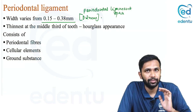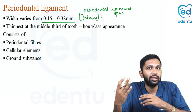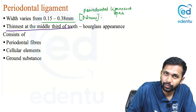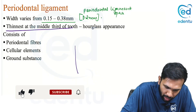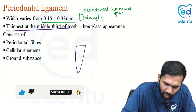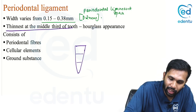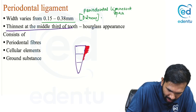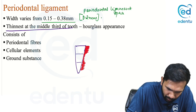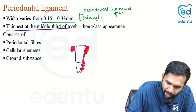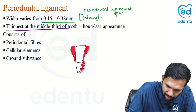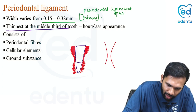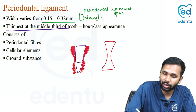The width of the periodontal ligament space is not constant — it varies across different regions. It is thinnest in the middle third of the root. If you divide the root into coronal, middle, and apical thirds, the PDL space is thick coronally, becomes very thin in the middle third, and again becomes thick in the apical region. This appearance is called the hourglass shape, which is commonly asked in VIVA questions.